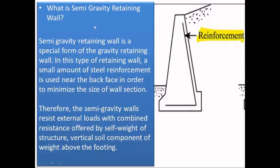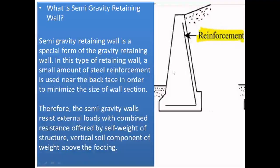The other type is the semi-gravity retaining wall. Semi-gravity retaining wall is almost the same as a gravity retaining wall, but in the design criteria, the combination of the self-weight of the retaining wall and the weight of the soil above the footing is taken into consideration. The total self-weight of the retaining wall and the backfill soil in combination resist the retaining wall from failing.